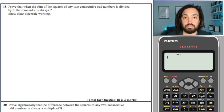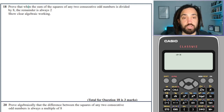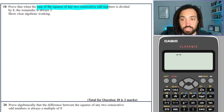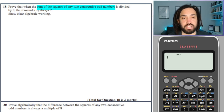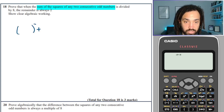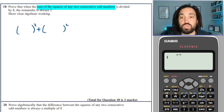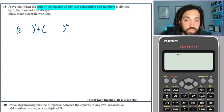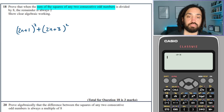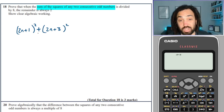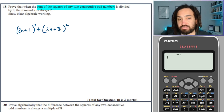Next: prove that when the sum of the squares of any two consecutive odd numbers is divided by 8. Let's break that down — sum means add, squares means squaring, two consecutive odd numbers. I'll use 2n plus 1 and 2n plus 3. I could do 2n plus 1 and 2n minus 1 to keep numbers lower, but let's do it this way.